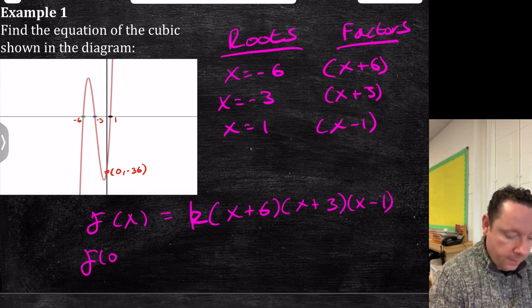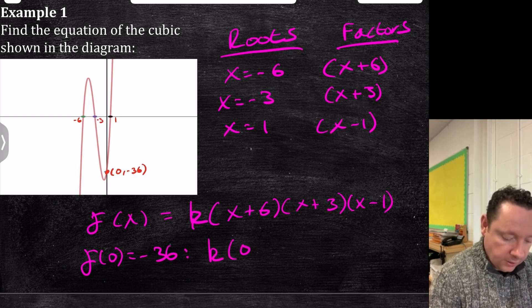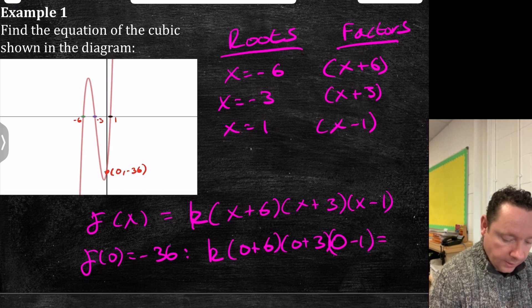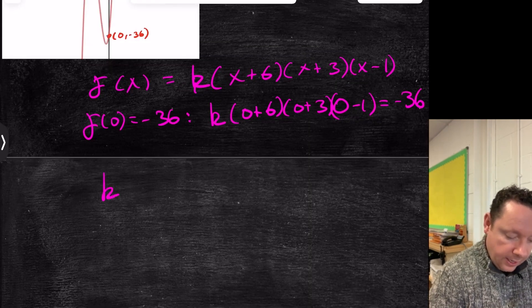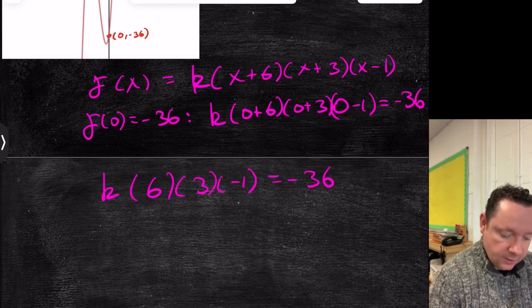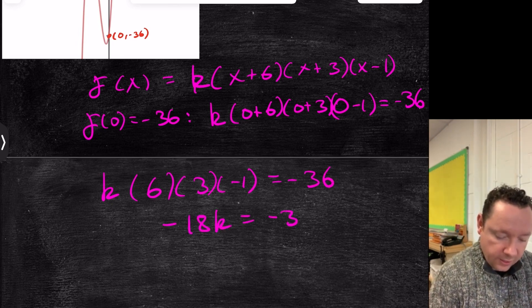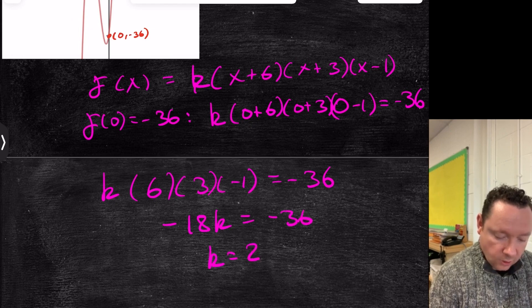So we just sub in 0. f of 0 equals minus 36 from that point. So that gives you k times 0 plus 6, 0 plus 3, 0 minus 1 equals minus 36. So solve that. It gives us k times 6, 3 and minus 1 equals minus 36. 6 times 3 is 18 times minus 1 is minus 18. So minus 18k equals minus 36. So k is equal to 2.